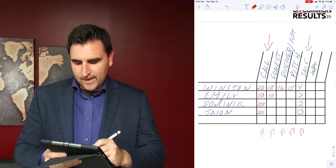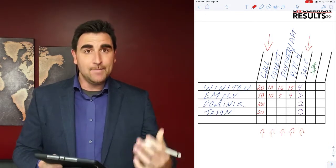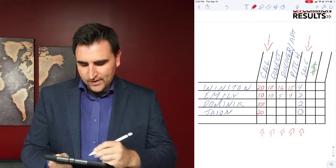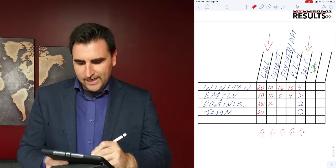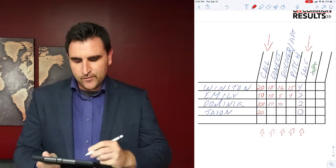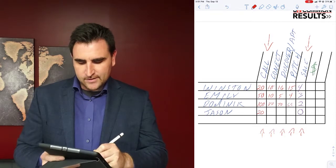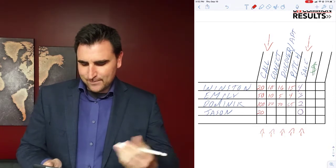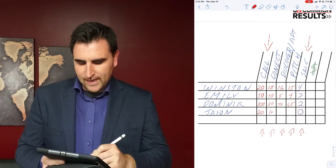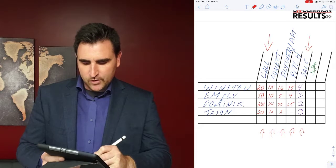Dominic made 100 calls, he's connected with 80 of them, he's done 70 discoveries, he's made 65 pitches and two sales. Jason called 20, connected with 10, discovered eight, made two pitches and zero sales. Now we start to see the truth on how to help our team, how we can make the biggest difference in our team's effort or our own.